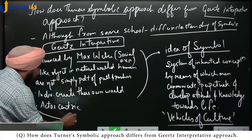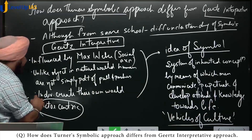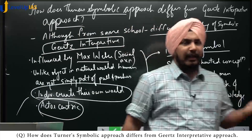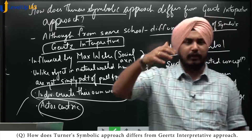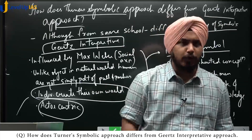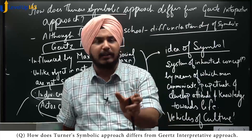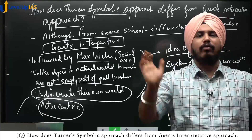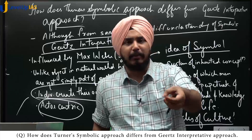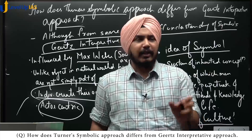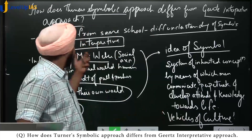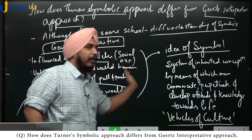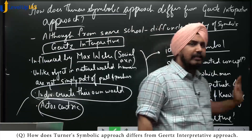Weber talks about an action-centric approach and says that individuals create their own world. He gives the idea of Verstehen — that the anthropologist should step into the shoes of the actor in order to understand the meaning of the symbol, how they interpret the outer world, and what meaning the symbol of the outer world creates in the mind. This Verstehen approach by Max Weber was adopted by Clifford Geertz, and this generated his idea of symbol.